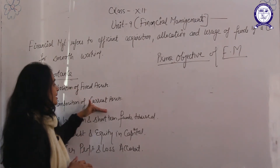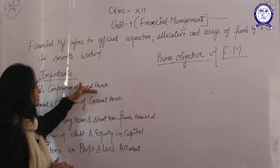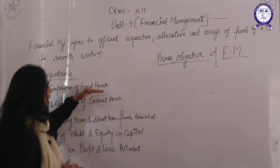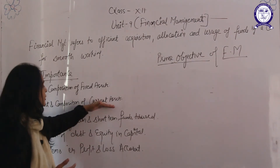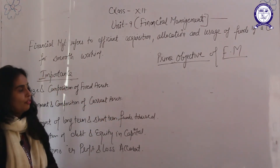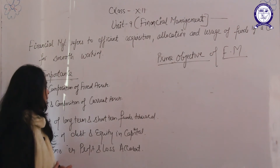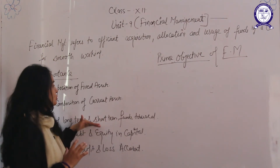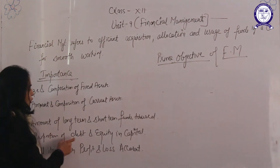The third importance is the amount of long-term and short-term funds to be used. To buy fixed assets and current assets, finance is needed. To invest money in fixed assets, funds must be arranged from long-term sources of finance. To invest money in current assets, funds must be arranged from short-term sources. Long-term sources include issue of equity and debt; short-term sources include trade credit and bank overdraft.